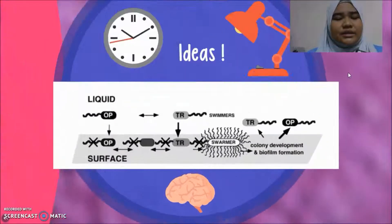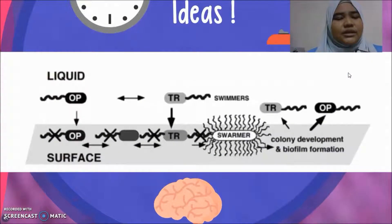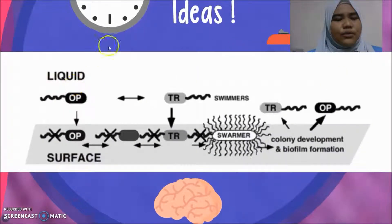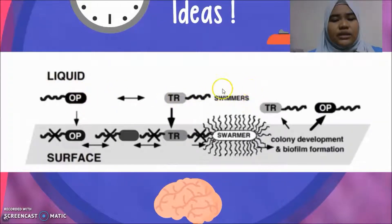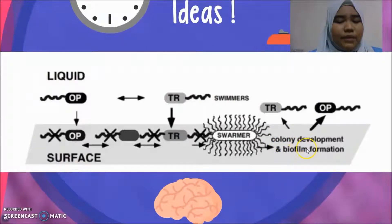So, for the diagram, this is the IDES showing the OPaC switching to the TR. And here are the swimmer, swarmer, and from the colony development, biofilm formation.